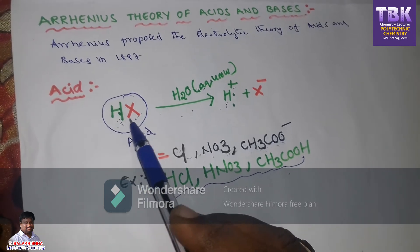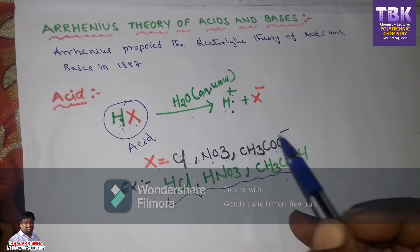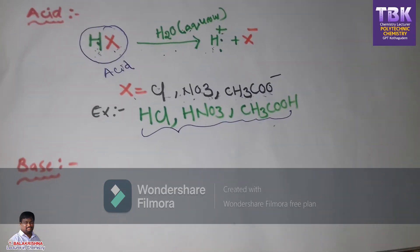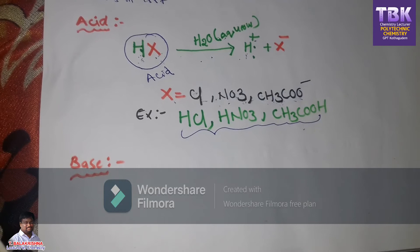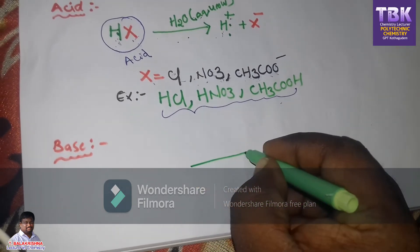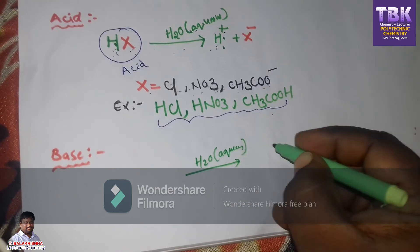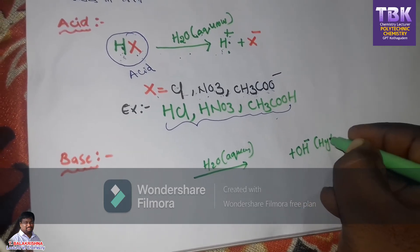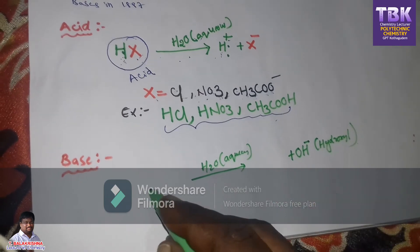According to the Arrhenius theory, a base is defined as the chemical substance that ionizes in water to produce hydroxyl ions. The chemical substance which ionizes in aqueous solution and produces OH minus ions — that is, hydroxyl ions — is called a base.